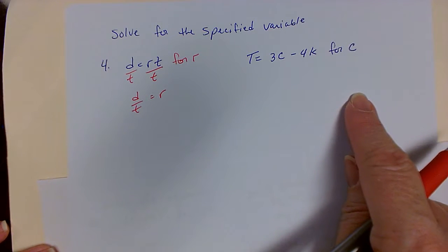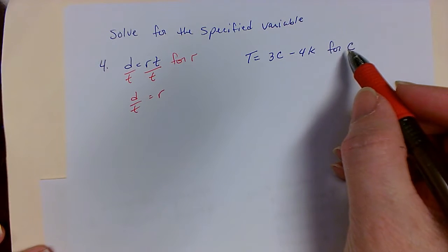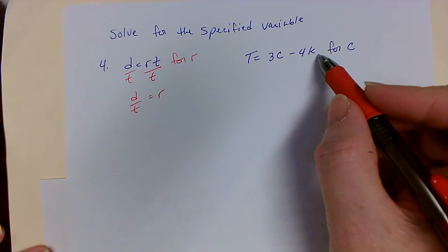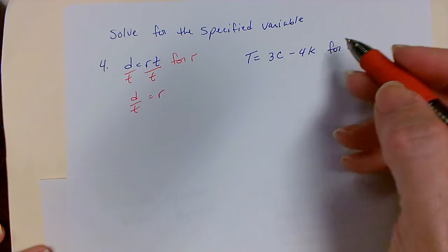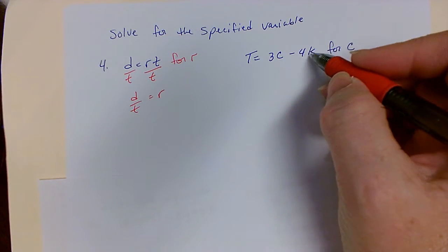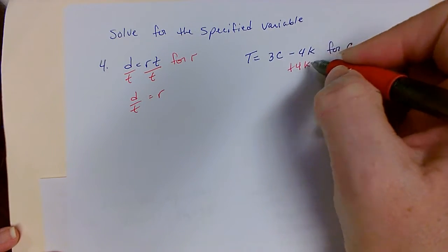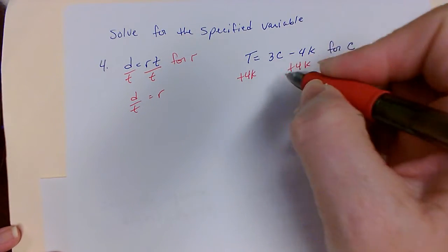For this equation, I'm going to do something different. I'm solving for c. The first thing I want to do is move whatever terms are away from that. The negative 4k is here, so I'm going to do the opposite and move it to the other side.